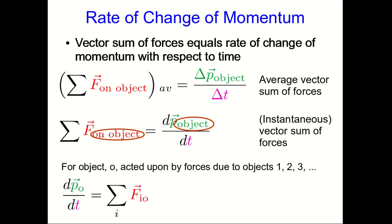So for some object O being acted upon by forces due to a bunch of different objects—one, two, three and so on—we can write it in a summation notation like this, which just means that it's some force due to one on O plus a force due to two on O and so on.